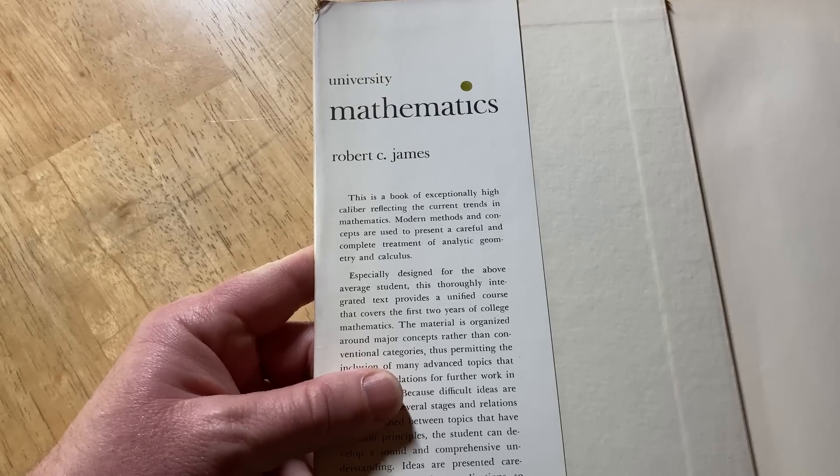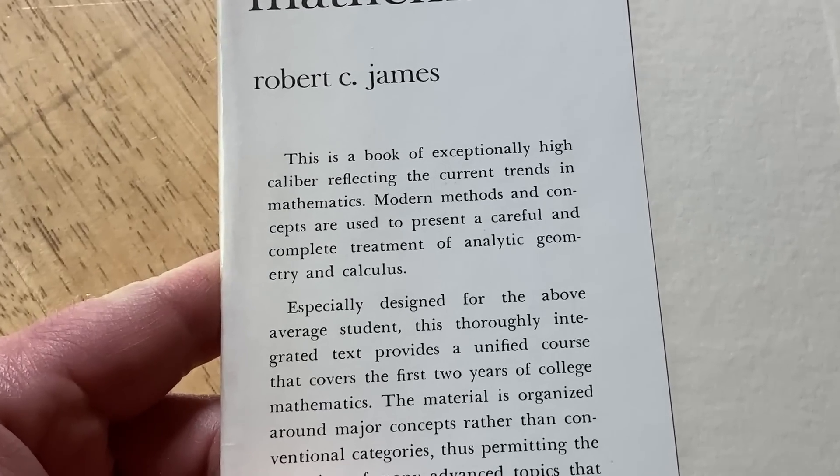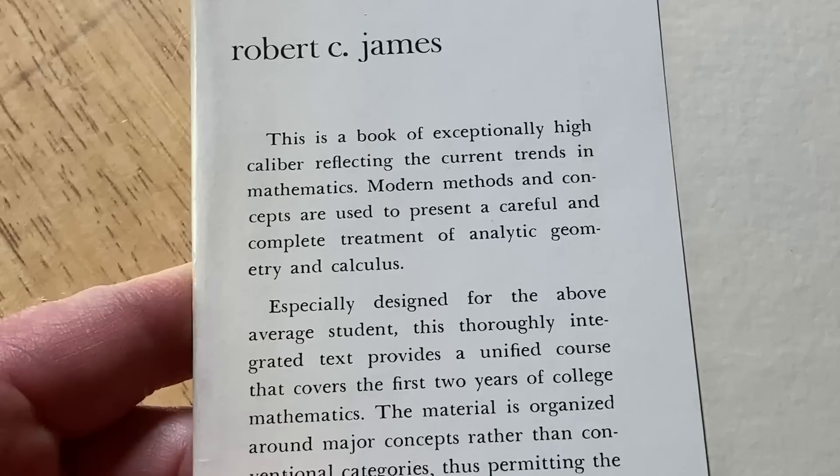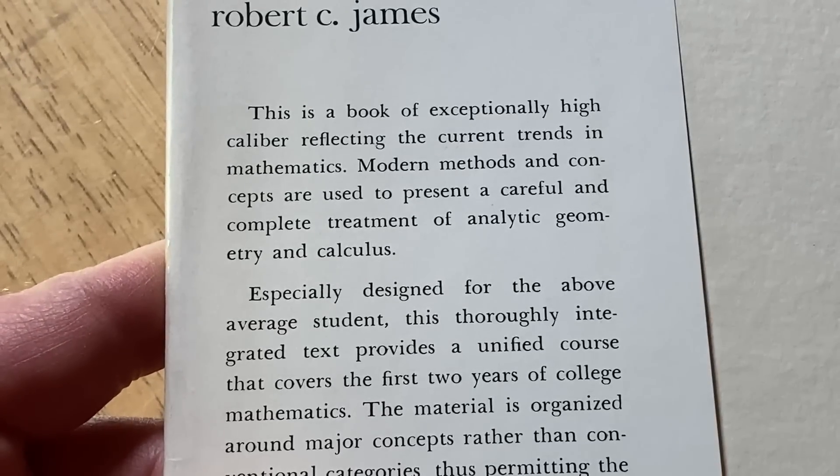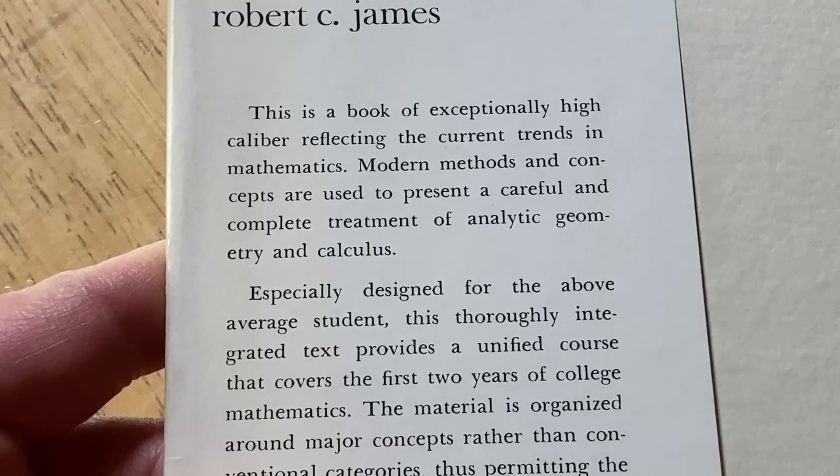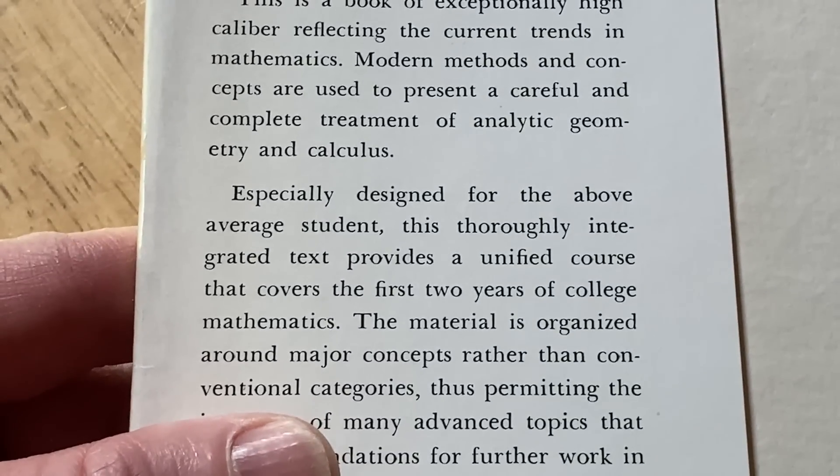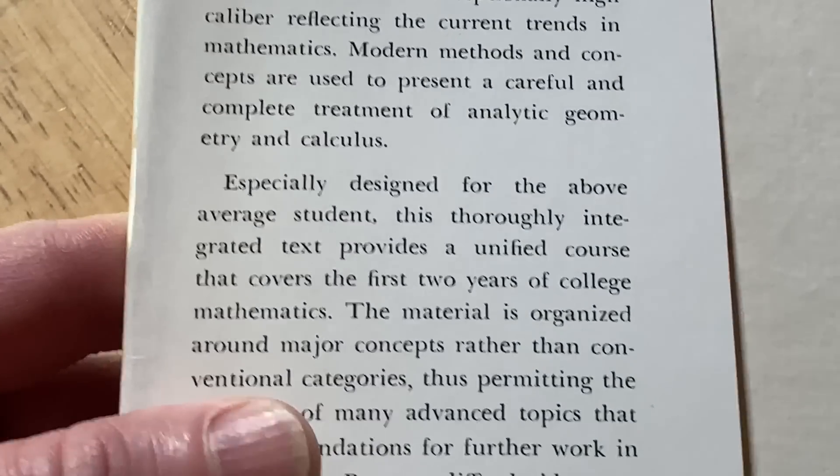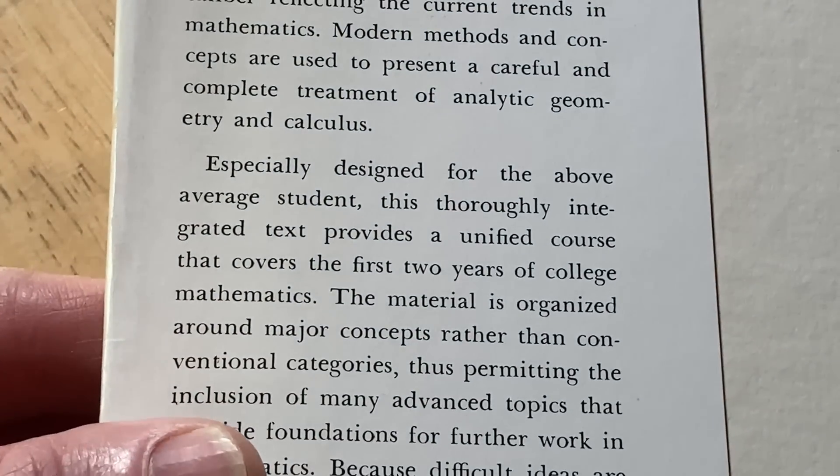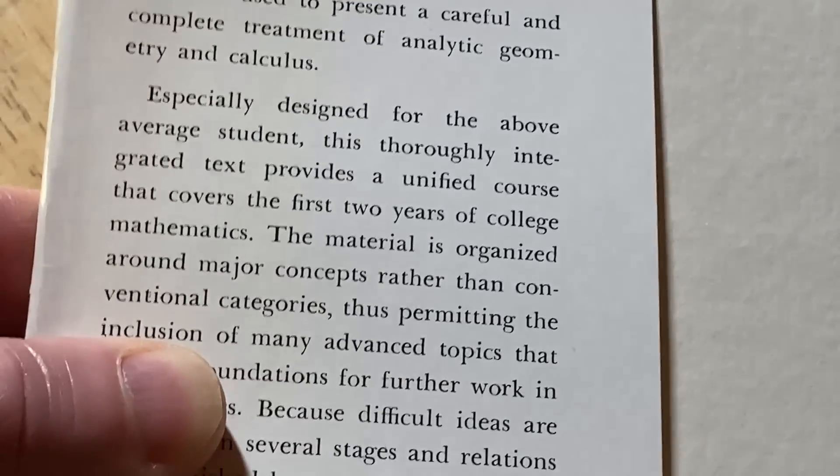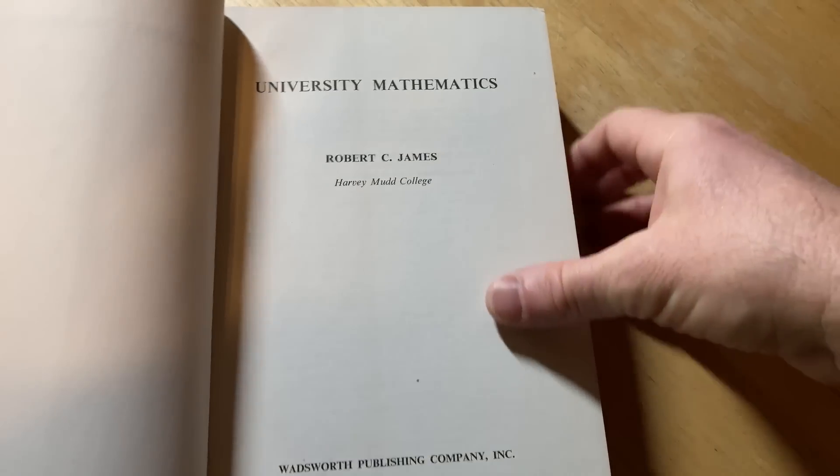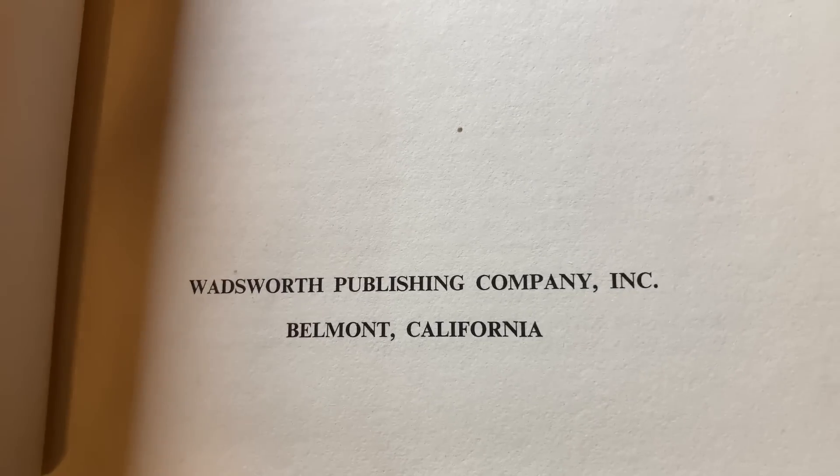Let's take a look at the inside of the dust jacket. I love dust jackets. This is a book of exceptionally high caliber, reflecting the current trends in mathematics. Modern methods and concepts are used to present a careful and complete treatment of analytic geometry and calculus. Especially designed for the above average student. This thoroughly integrated text provides a unified course that covers the first two years of college mathematics. Robert C. Davis, Harvey Mudd College, published by Wadsworth Publishing Company, Inc., Belmont, California.